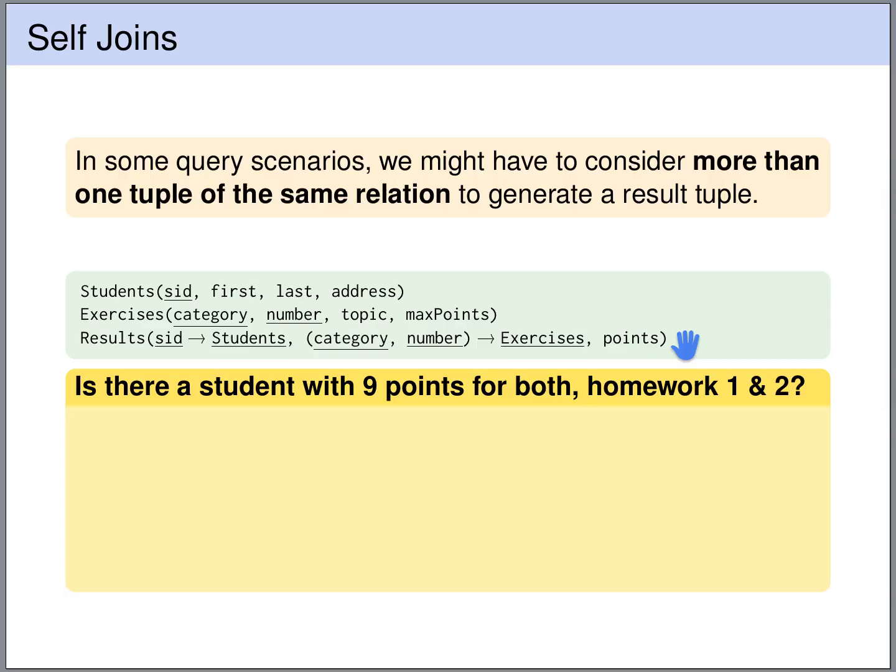Because we want to look at two different homeworks, every row in the results table contains one result. But now we want to look at the result for homework one and the result for homework two at the same time, so we will need to query the results table twice.